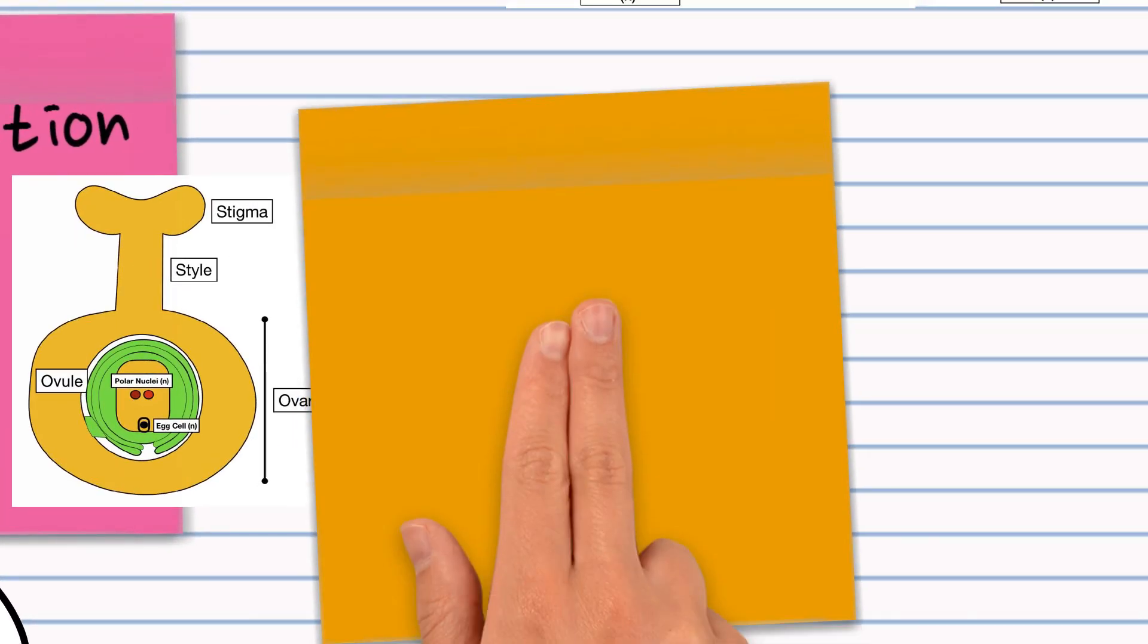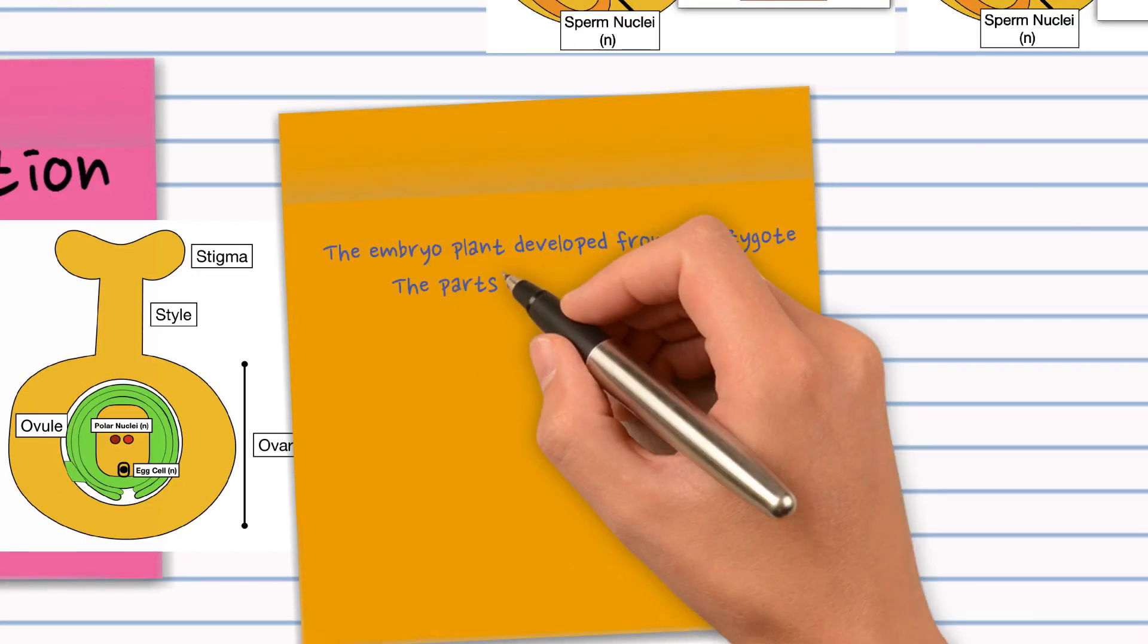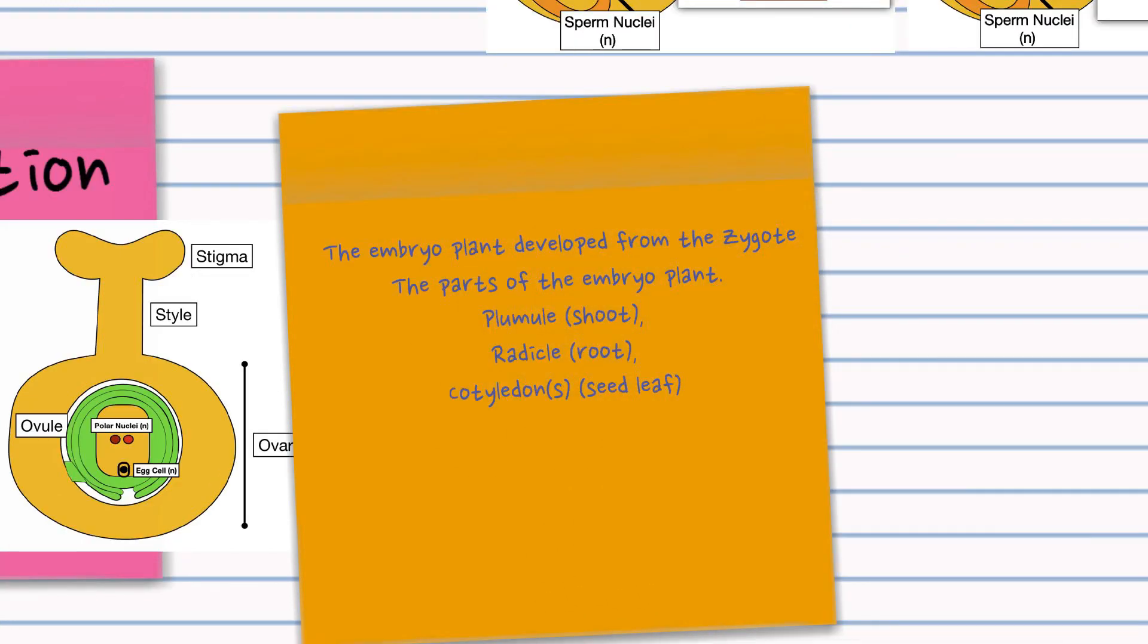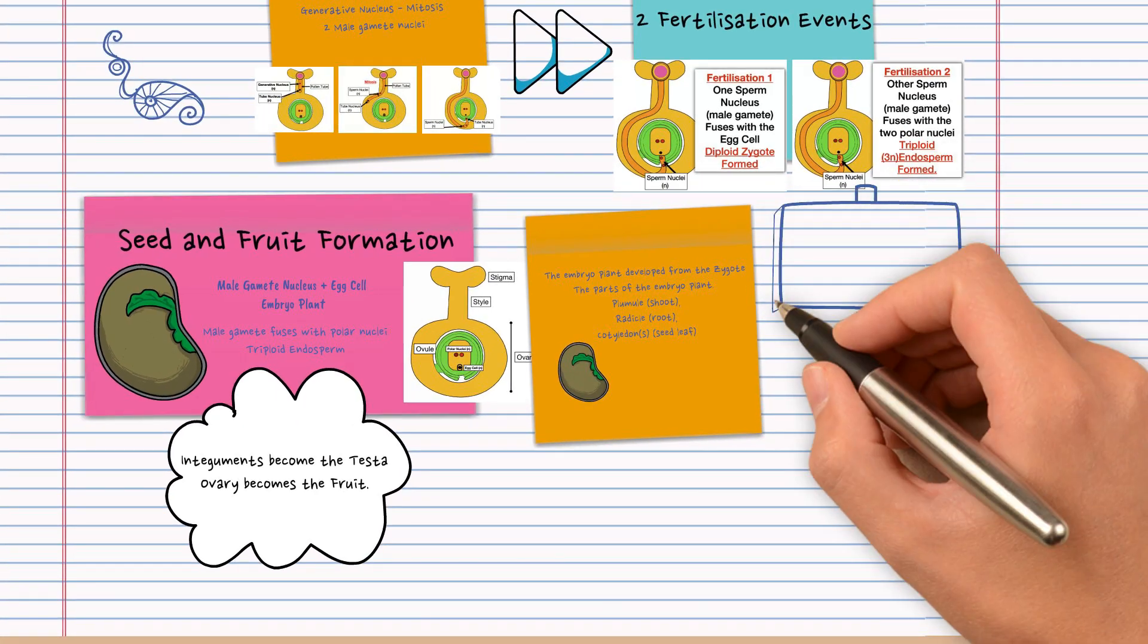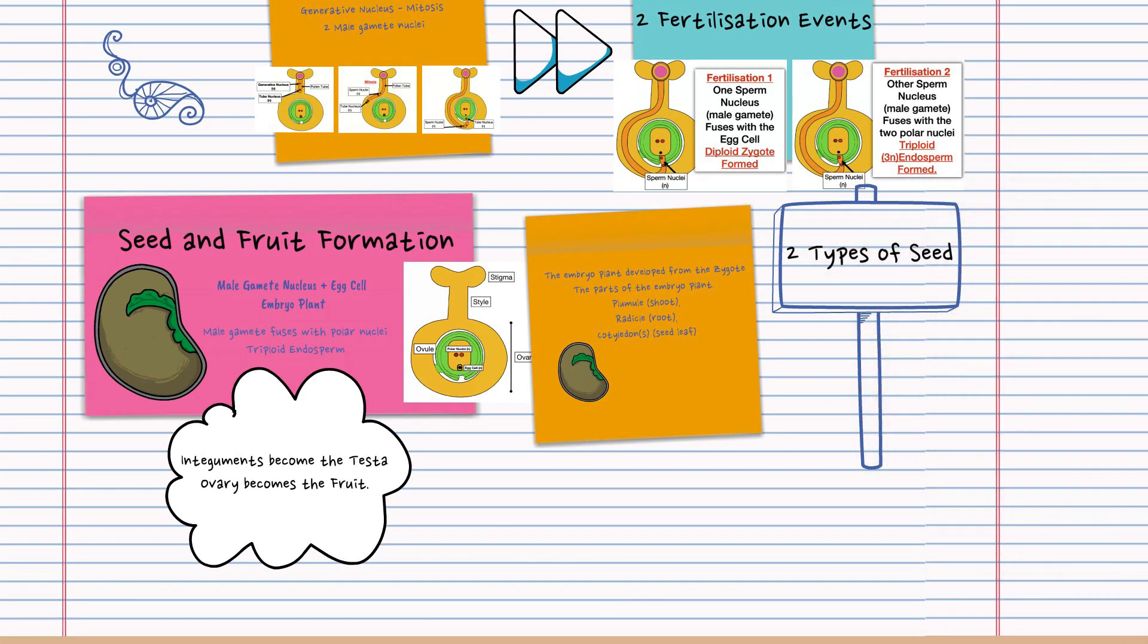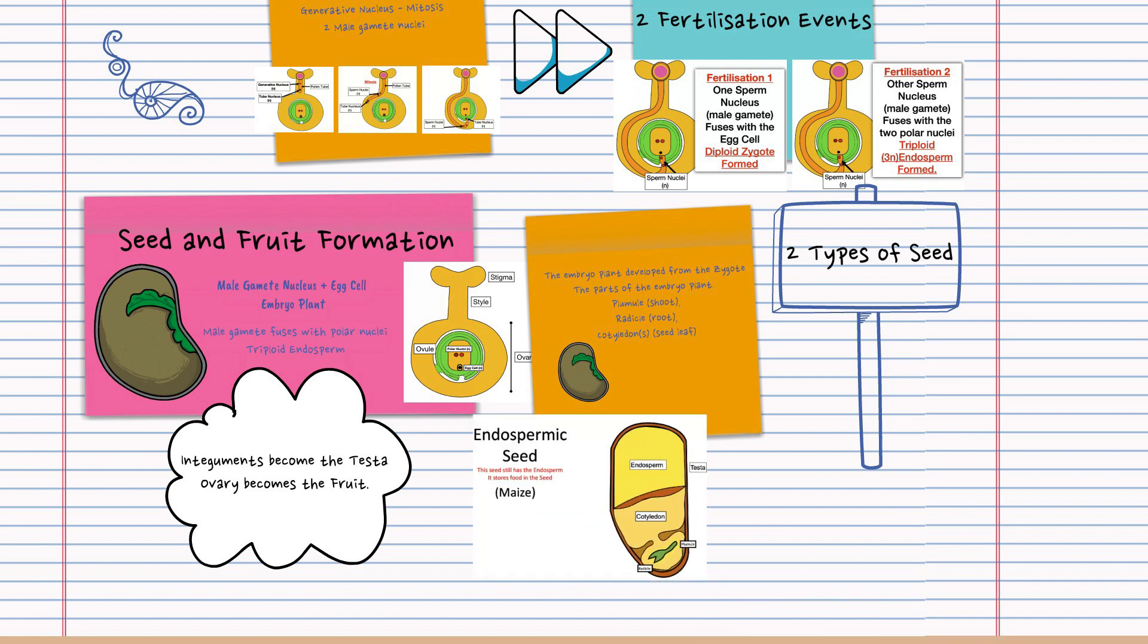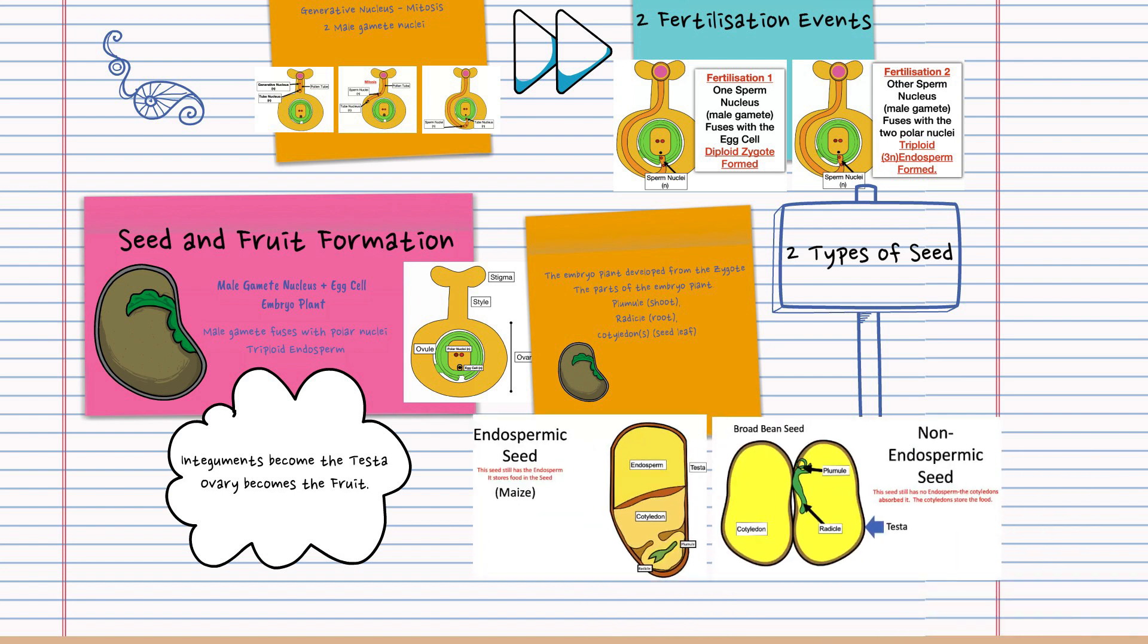An embryo plant has a part that becomes the shoot, the plumule, the radicle which forms the root, and either one or two seed leaves called cotyledons. So there are two types or two groups of seeds. Endospermic seeds do have an endosperm and store their food there. Non-endospermic seeds do not and they store their food in cotyledons.